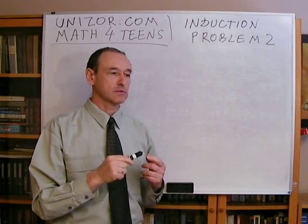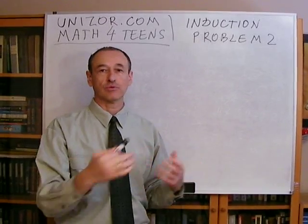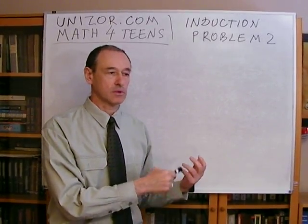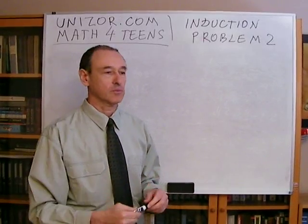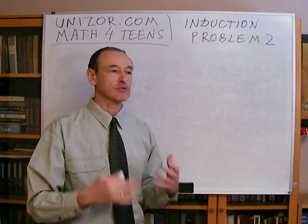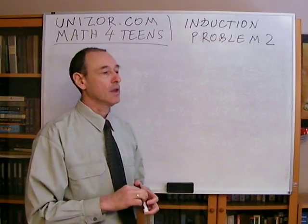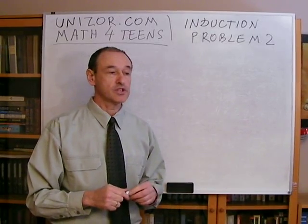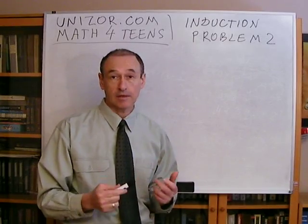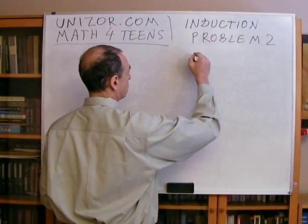Before, we were talking about certain algebraic formulas where the left part is equal to the right part — for instance, a sum from one to n equal to some expression on the right — and we were trying to prove this equality using the method of mathematical induction. Not only these equalities can be proved this way. This problem will be about an inequality.